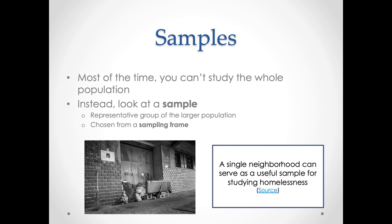Researchers don't always construct samples. Sometimes they do actually look at the population. For example, qualitative researchers often will define the population of interest as people who go to a particular institution. I myself have previously done research on schools, and I was looking at a school with 500 students and was actually able to interact with most of them.